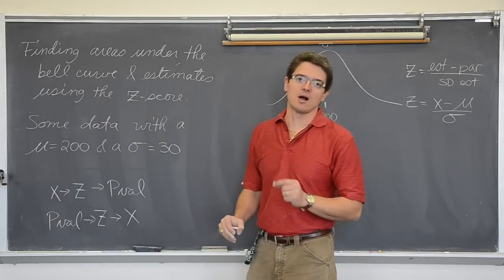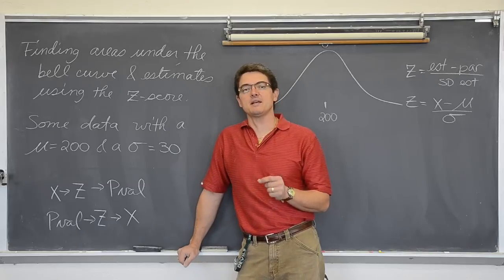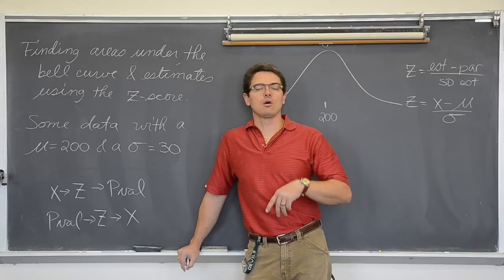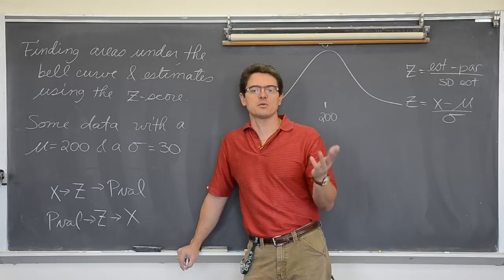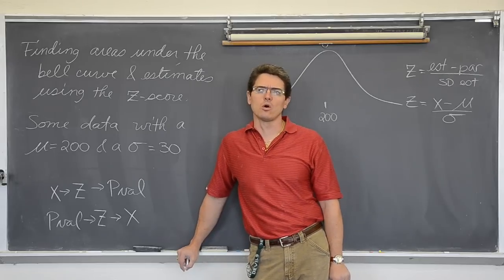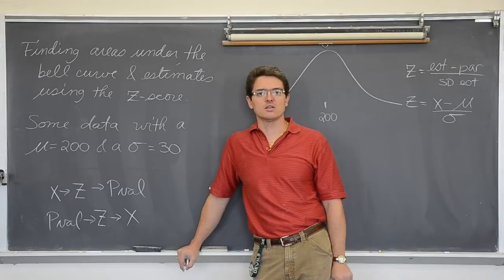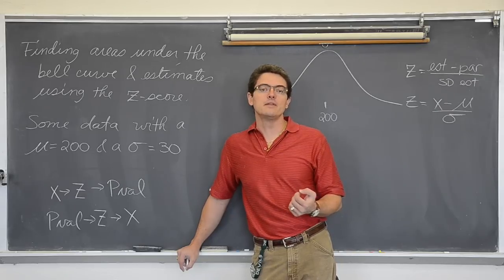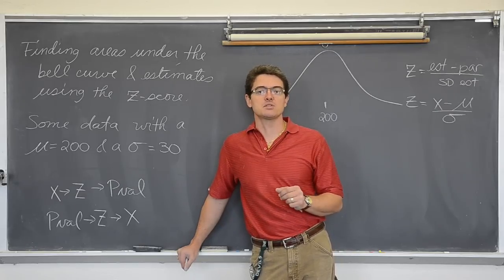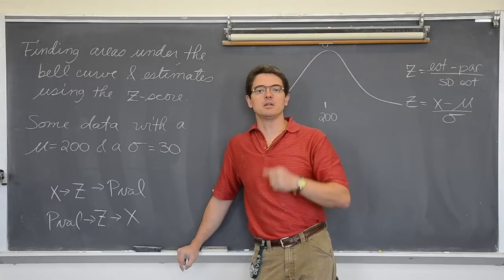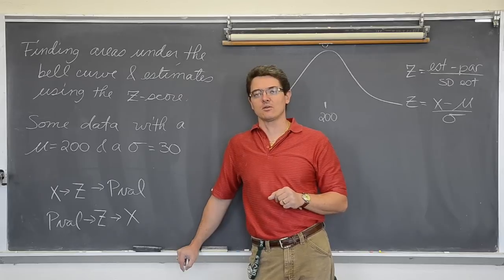Every single problem that gives you or says that a distribution is normal and then asks you for the probability of an event or what proportion of data lies within some interval, all questions like that will be followed or worked with the z-score calculation. We will learn other variables such as the discrete random variable that may not be using that z-score calculation. But if you hear normal and then proportional probability that will be a z-score calculation.